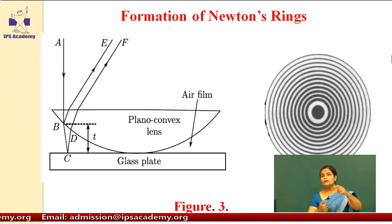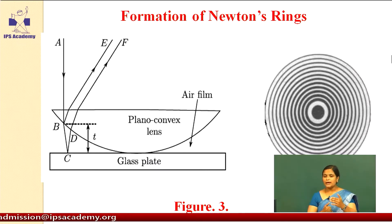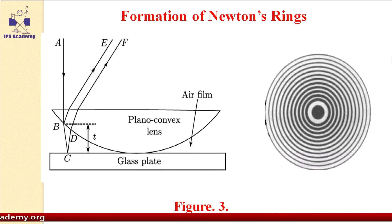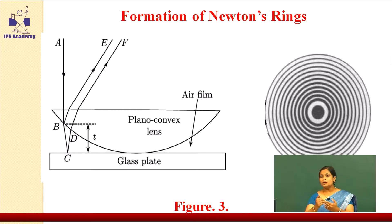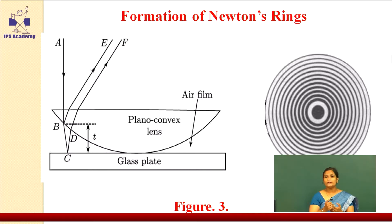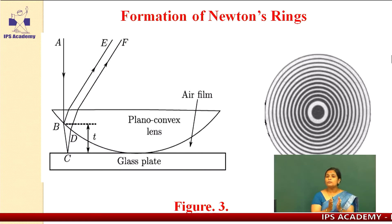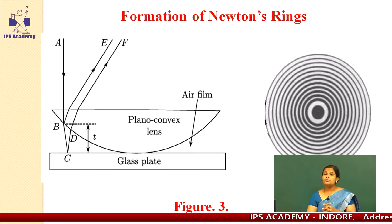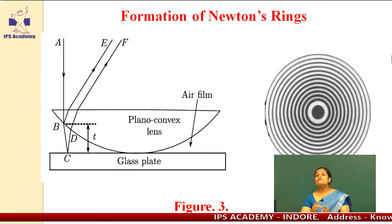Here the same process is happening. The light AB is the incident light and it will strike point C at the glass plate. Because there is normal incidence, it will travel the same path, and one point is D here. There is a gap in between the plano-convex lens and the glass plate. The light reflecting from point B and the light reflecting from point C undergo superposition, designated as E and F here. This superposition of the light gives the interference pattern in the form of Newton's rings.